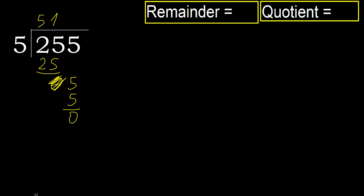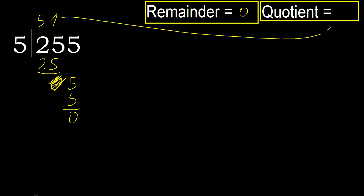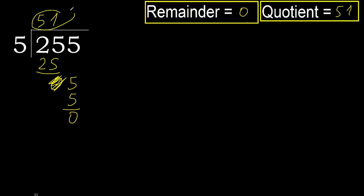That is not a number, therefore finish it. 255 divided by 5 is 51. Ok.